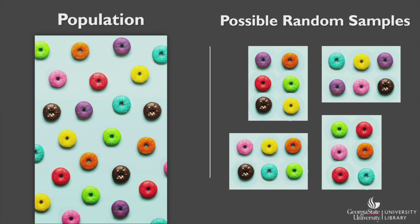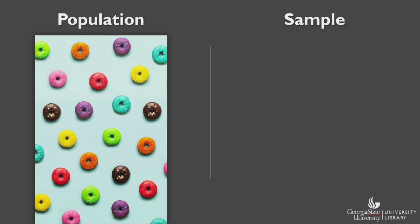The picture on the left represents the population of donuts, while the four boxes on the right represent possible samples of the donuts. At the end of the day, you end up sampling these six donuts.